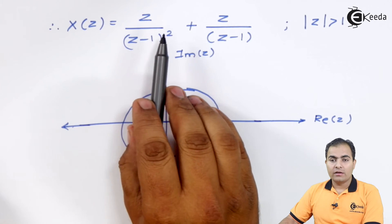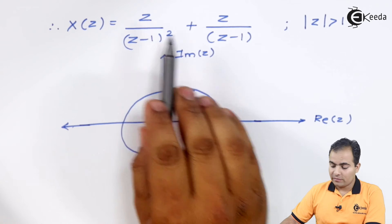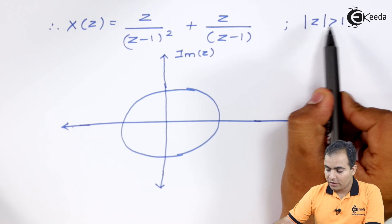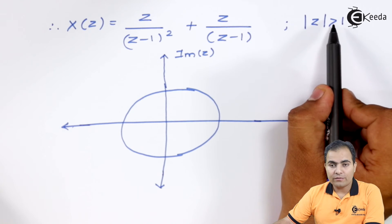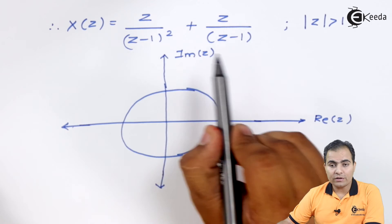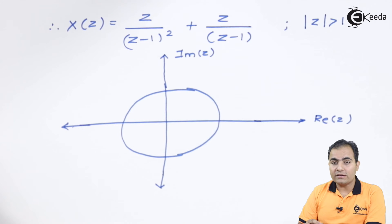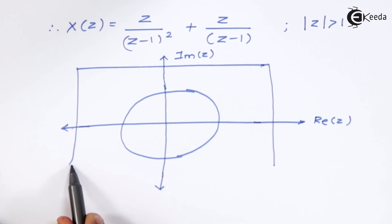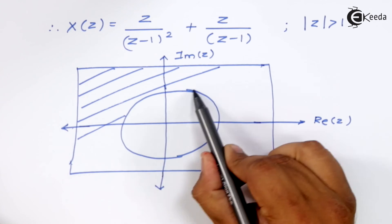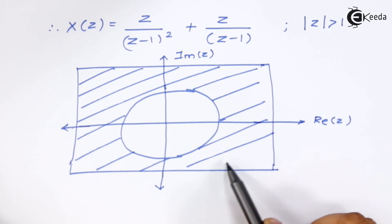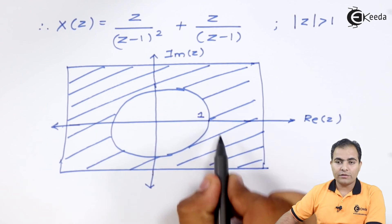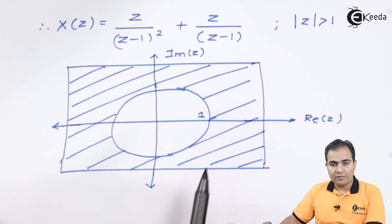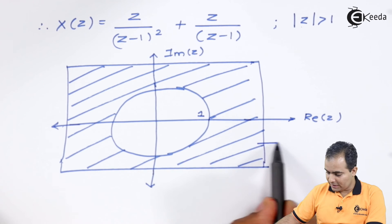This part gives ROC |z| > 1 and this part also gives ROC |z| > 1, so combinedly the ROC of the whole function is |z| > 1. This means we plot the unit circle, and the ROC of X(z) is available outside the unit circle — the outermost part of the unit circle. That is the ROC of X(z).